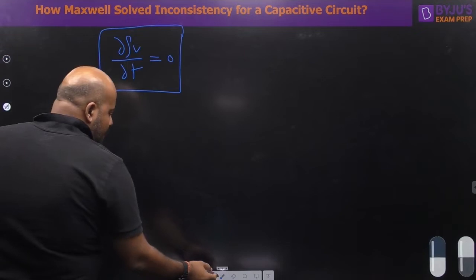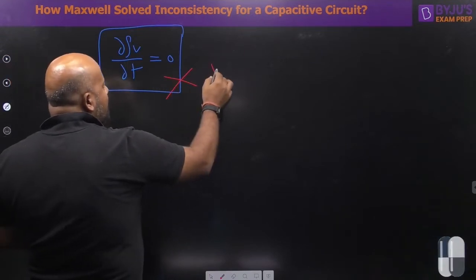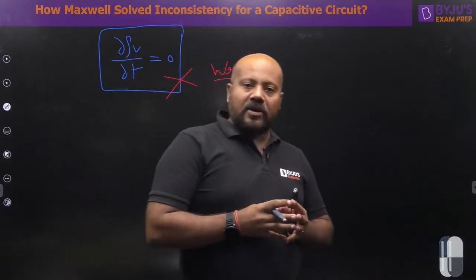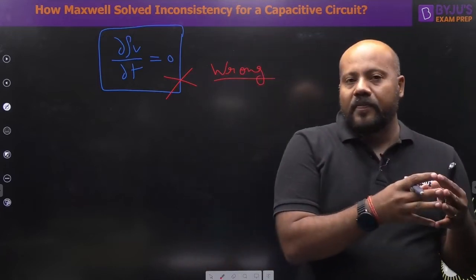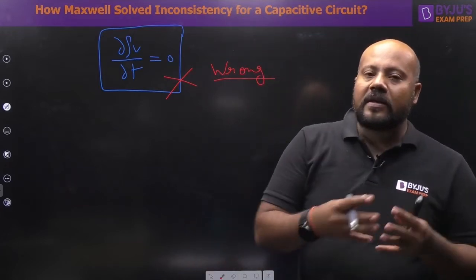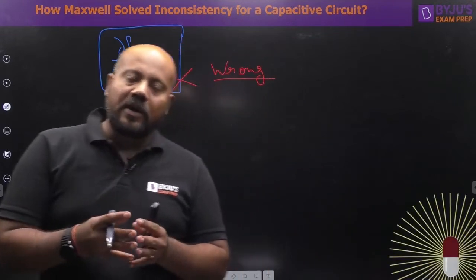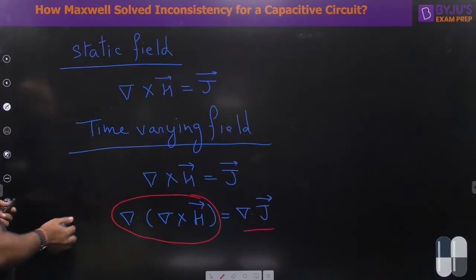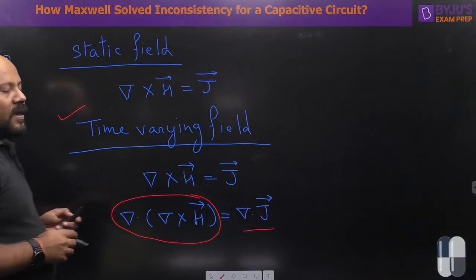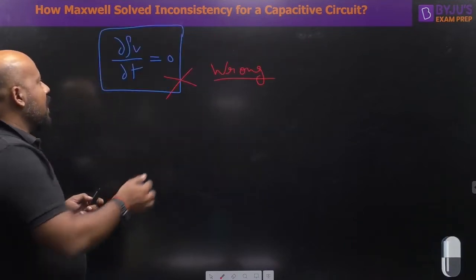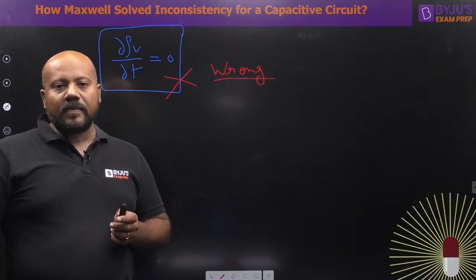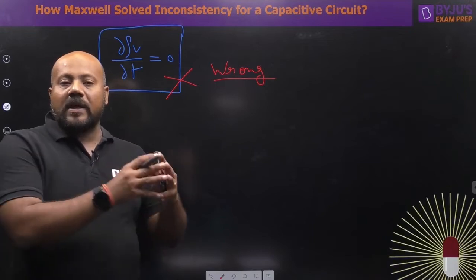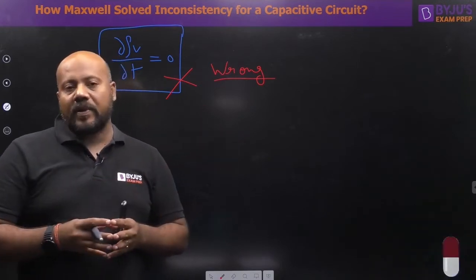Now, which is wrong? This conclusion is wrong. Because if you talk about the conduction current, the charges must be flowing — the charge density must be changing with respect to time, as we are dealing with a time-varying field. We started our derivation with a time-varying field, but at the end we are getting that a time-varying field is not possible. So Maxwell said there is definitely a missing term in the Ampere's circuital law.